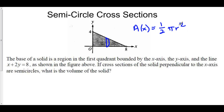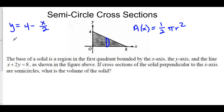Let's figure out how we can get r in terms of x. The full diameter is equal to the distance from the x-axis up to our line — that's just y. So we can turn this equation into a function of y in terms of x by subtracting x from both sides and dividing by 2. We get y equals 4 minus x over 2, which means the diameter of each semicircle is equal to 4 minus x over 2.